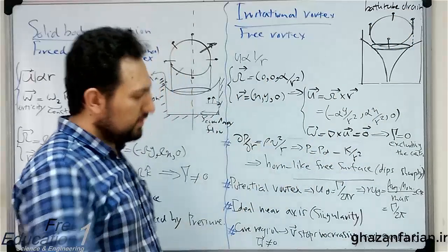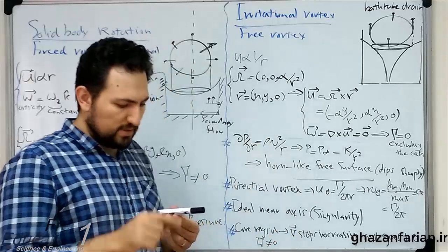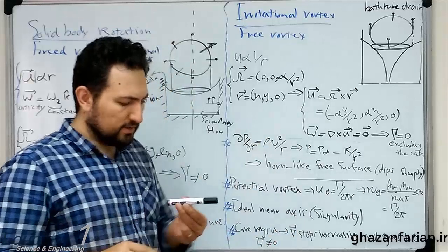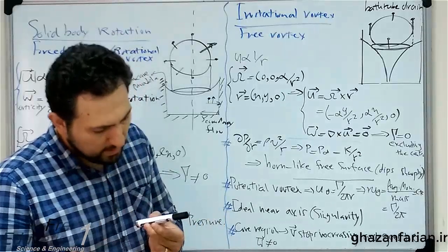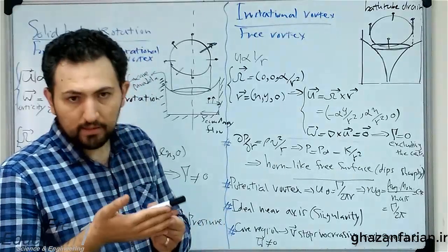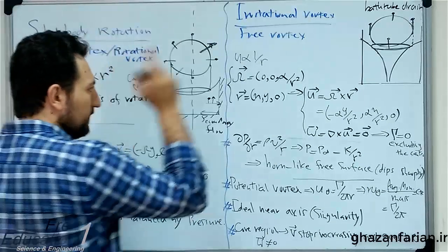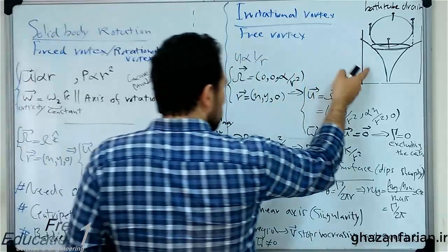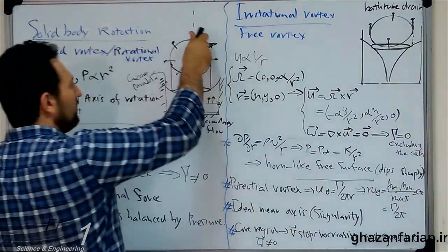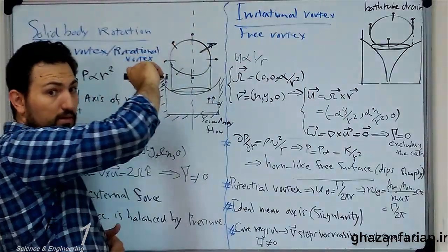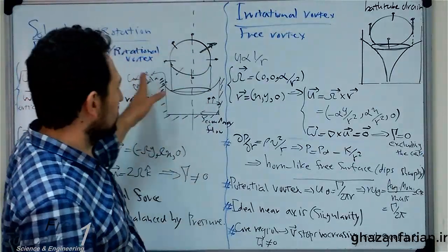When it rotates, it rotates without changing orientation — something like this. It means that there is no rotation in the fluid particle near this visualizer. So this flow field is irrotational, but the other case — where the particle of fluid rotates — is rotational.